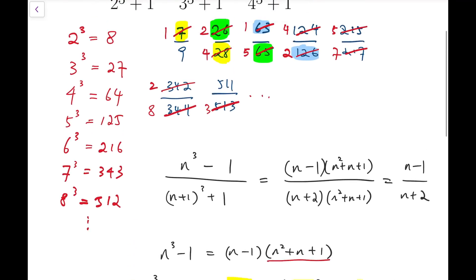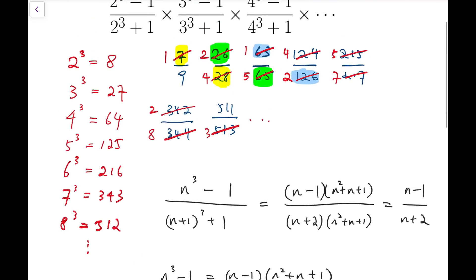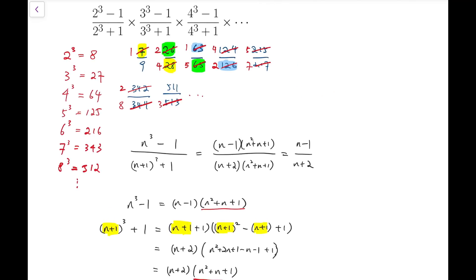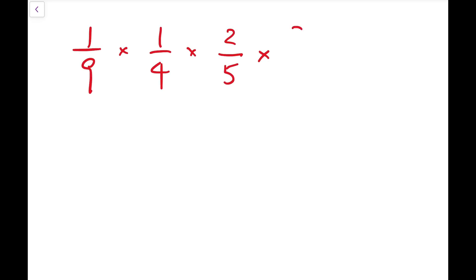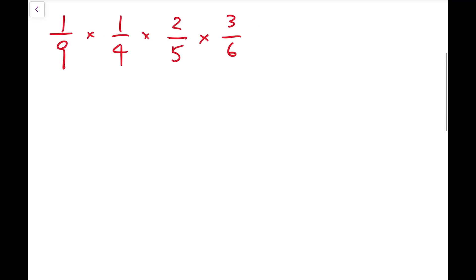So the factors left, going back to our fractions: we have the starting 1 over 9. Then starting from n equals 2, the product 2 cubed minus 1 over 3 cubed plus 1 becomes 1 over 4, times 2 over 5, times 3 over 6, times 4 over 7, times 5 over 8, times 6 over 9, and so on — fractions where the denominator is always 3 larger than the numerator.